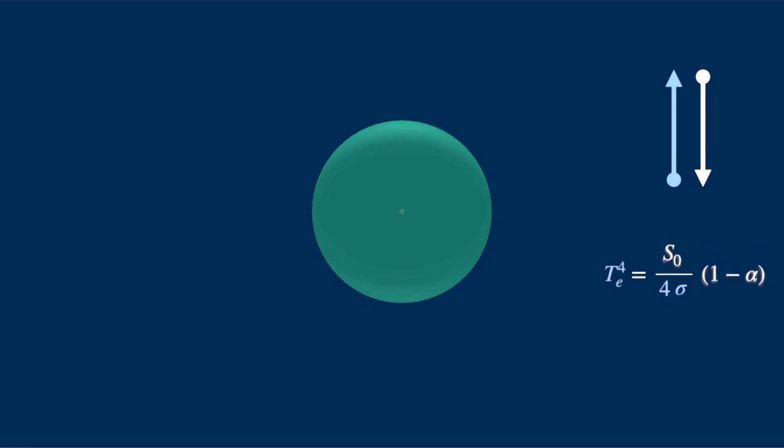If we assume alpha equals 33 percent, meaning the Earth absorbs 67 percent of the incident light, then we find that this temperature equals 252 Kelvin, which is minus 21 degrees centigrade.